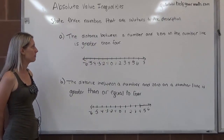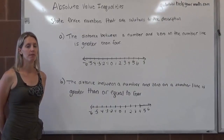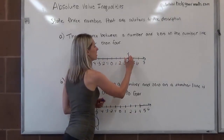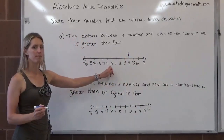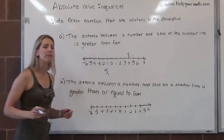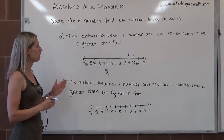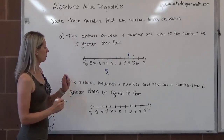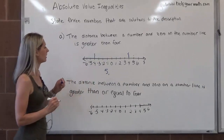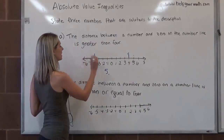Letter A is asking us to find three numbers whose distance between that number and 0 on the number line is greater than 4. What's a number that's further away from 0 than 4? How about 5? So 5 is one number. Next, we want a negative number whose distance is greater than 4 from 0. Negative 4 has a distance of 4, so how about negative 6?